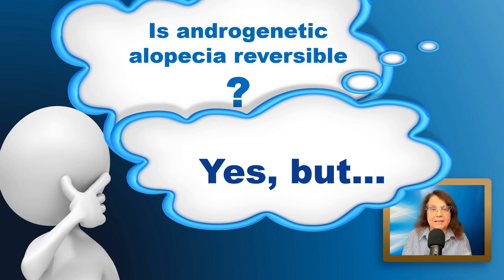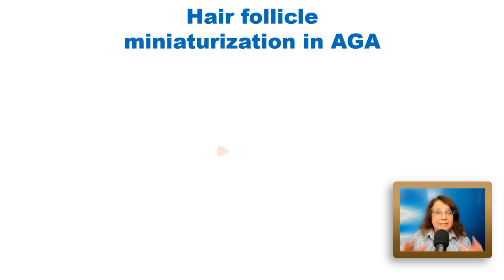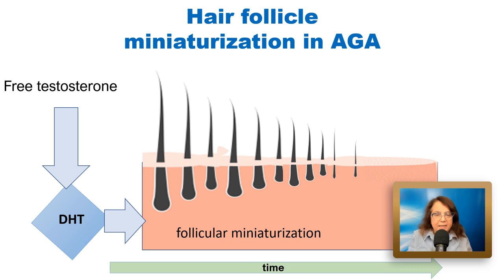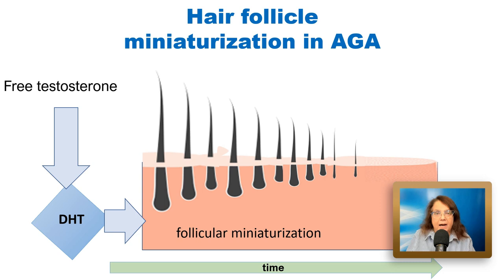We all know that hair follicle miniaturization is the main problem in androgenetic alopecia. Testosterone induces hair follicle miniaturization. The hair follicle becomes increasingly small and produces hair shafts which are smaller and smaller, and they also become hypopigmented. So at the end of this path, the follicle is producing vellus hairs which are basically invisible.